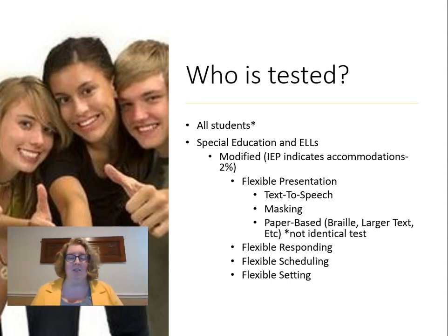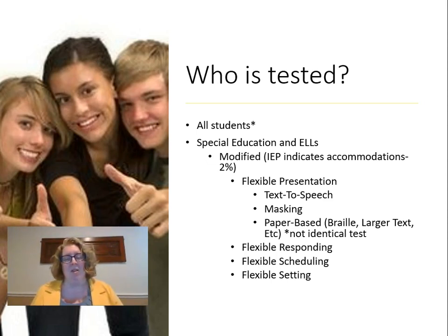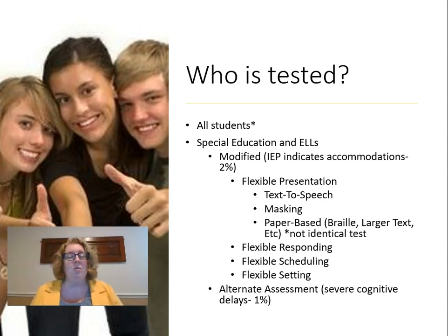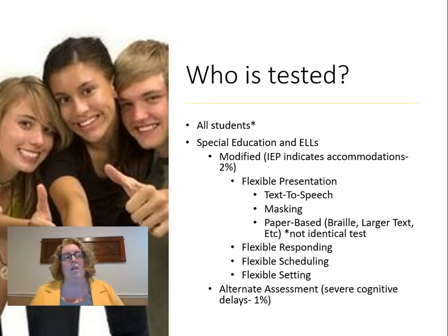You can have flexible responding — having someone else click on the computer for a student. Flexible scheduling — giving them more time — is probably one of the more common accommodations. Flexible setting means giving the test in a smaller environment. Those last two are the most common modifications you'll see in schools. We can give an alternate assessment for students with severe cognitive delays — usually less than 1% of the school population — those working on alternate non-academic learning goals like daily living skills, toileting, tying their shoes, or basic self-care. Students who are non-verbal might also be given alternate assessments.